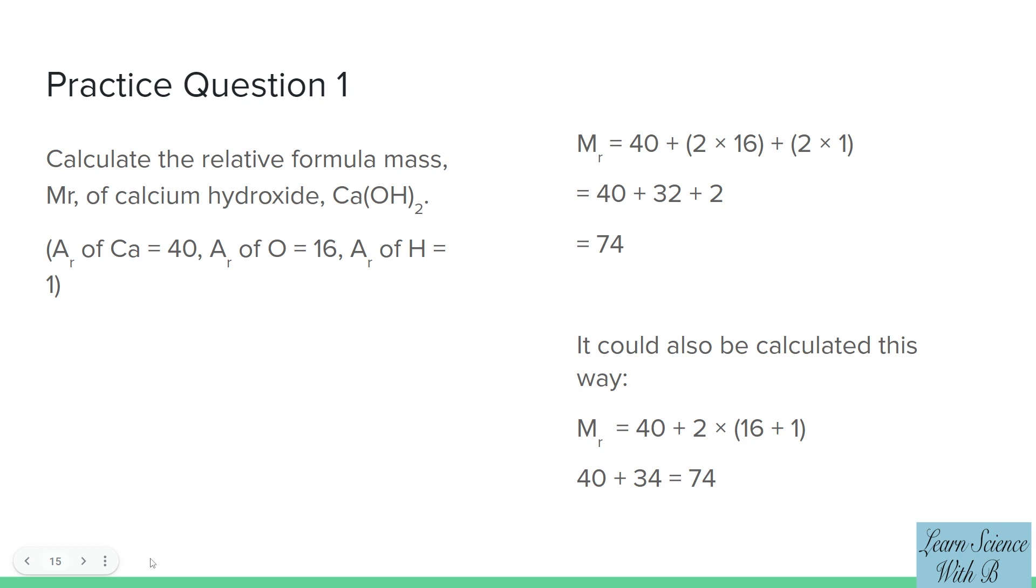It could also be calculated this way: MR equals 40 plus 2 times (16 plus 1). 40 plus 34 equals 74.